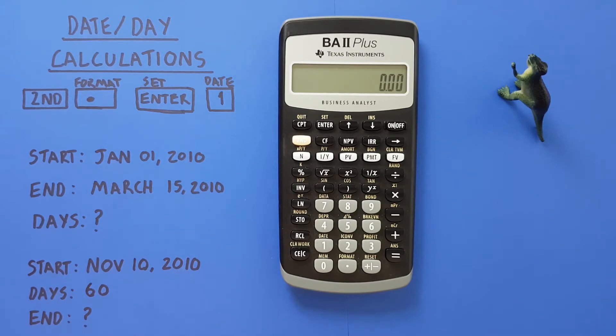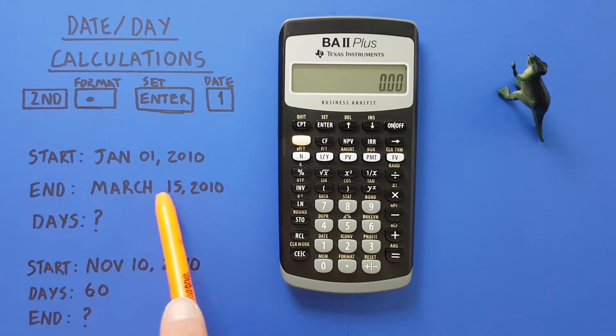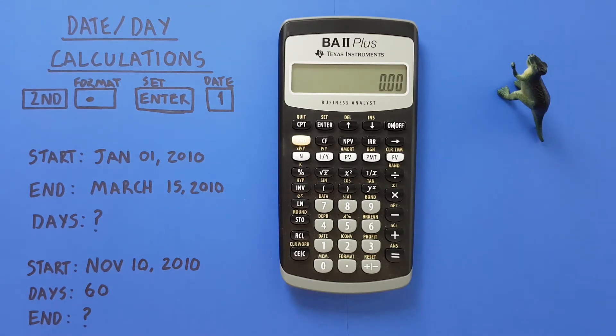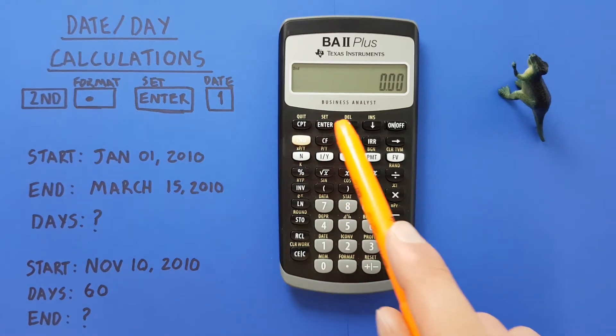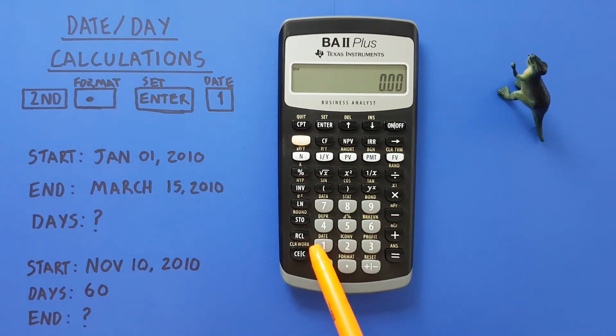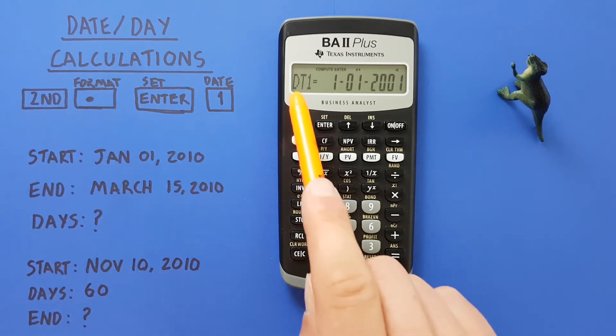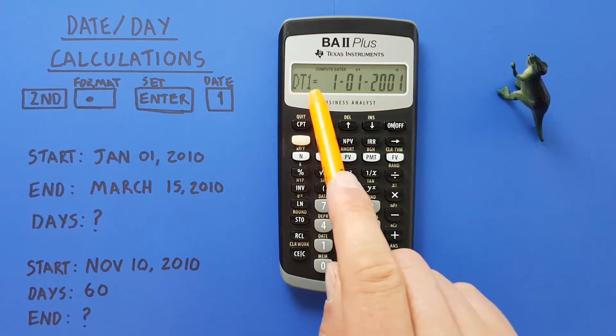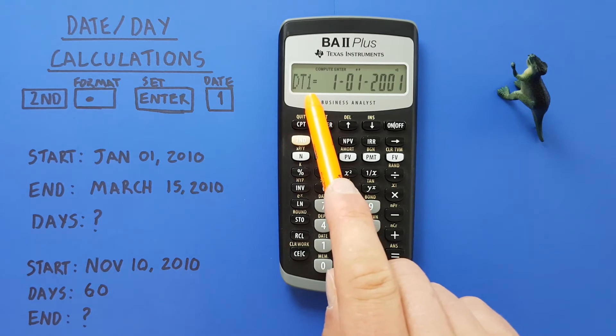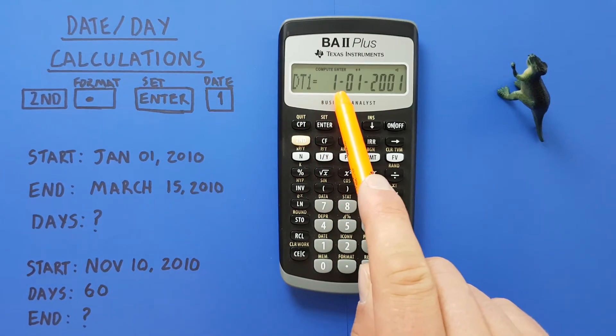Now that we know what format our calculator is using, we can exit this and begin working with our dates. Let's say we were given a project on January 1st, 2010 and we're asked to complete it by March 15th, 2010 and we wanted to figure out how many days we had to get that project done. Well, to do that what we can do is press the second function key and then the one with the second function of date. That'll bring this screen up, DT1, which represents date one.